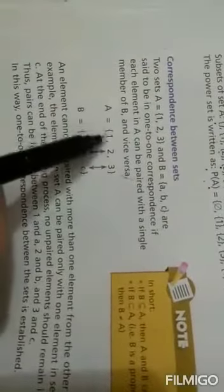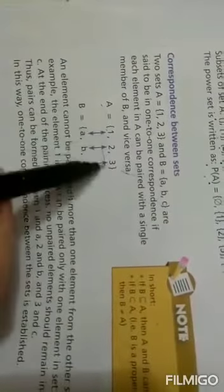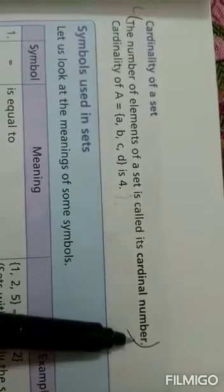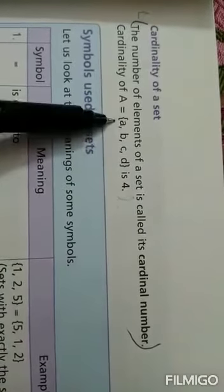Correspondence means, students, if you simply understand this, you have to learn that if you have 3 elements on top and 3 below, then they are one-to-one corresponding. Next, cardinality: number of elements of a set. It means this is 4 elements, so the cardinality is 4.